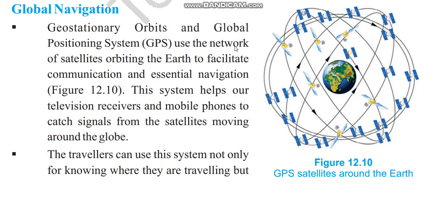GPS uses a network of satellites orbiting the earth to facilitate communication and essential navigation. This system helps our television receivers and mobile phones to catch signals from satellites moving around the globe. Travelers can use this system not only for knowing where they are traveling — figure 12.10 shows GPS satellites around the earth.